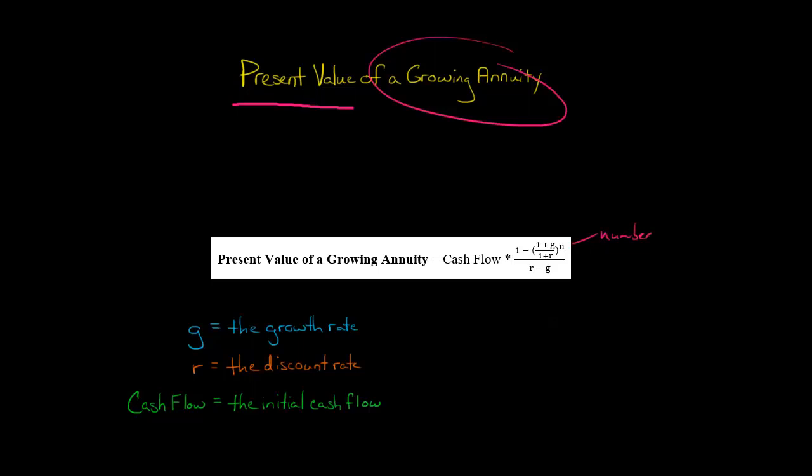N is the number of periods. And then we divide all of that, divide our numerator, by R minus G, so the discount rate minus the growth rate.